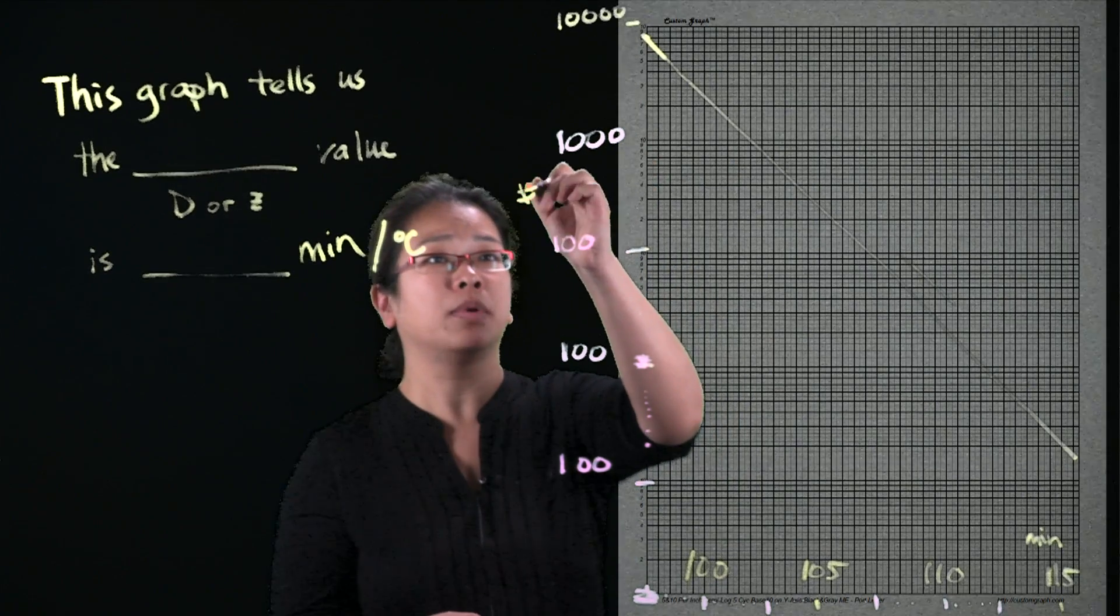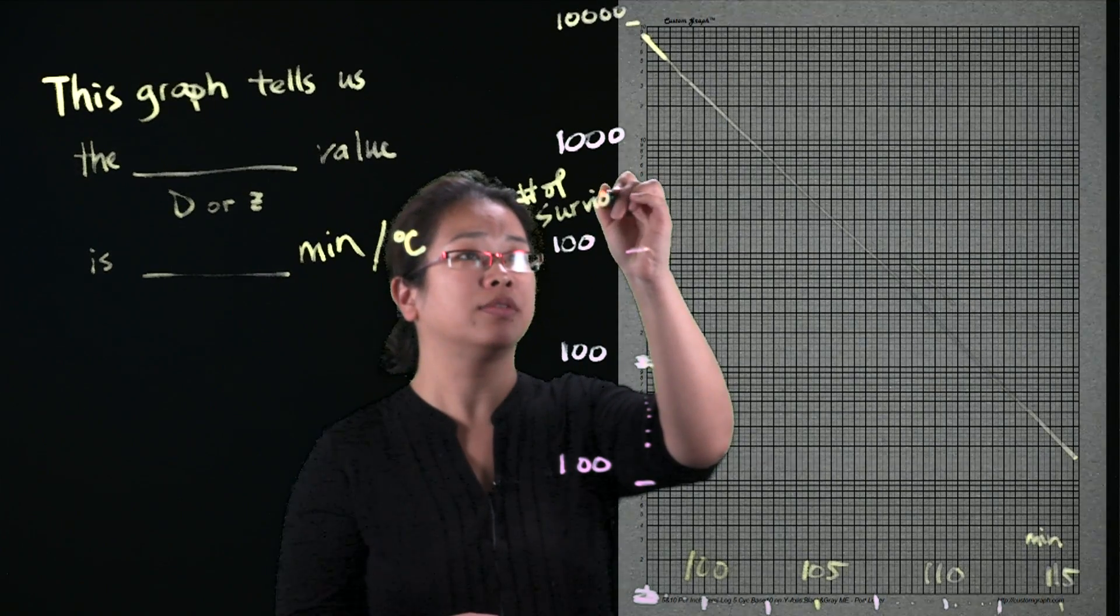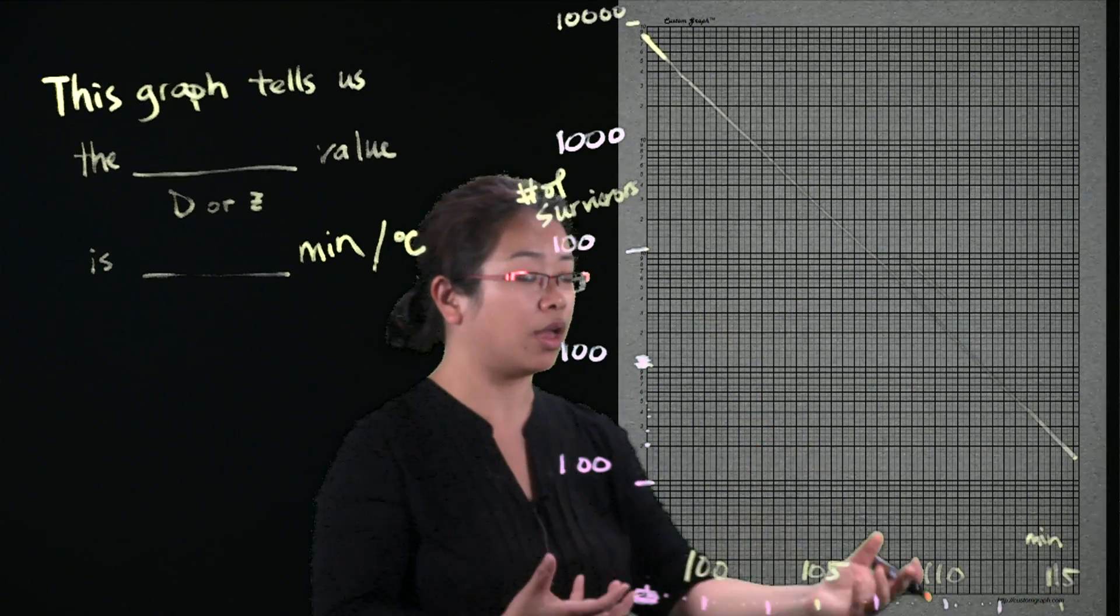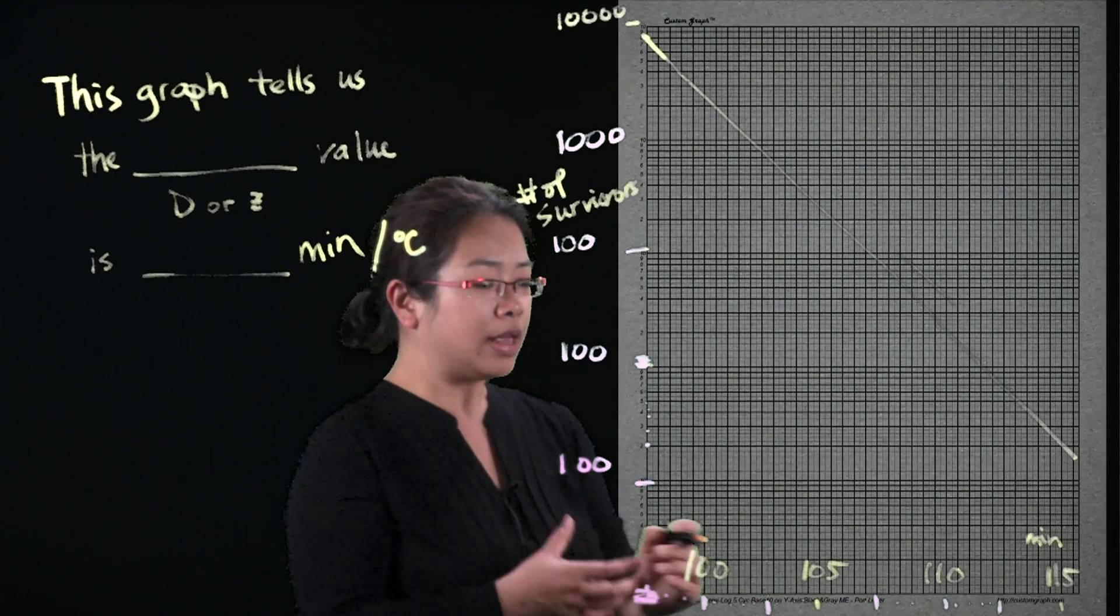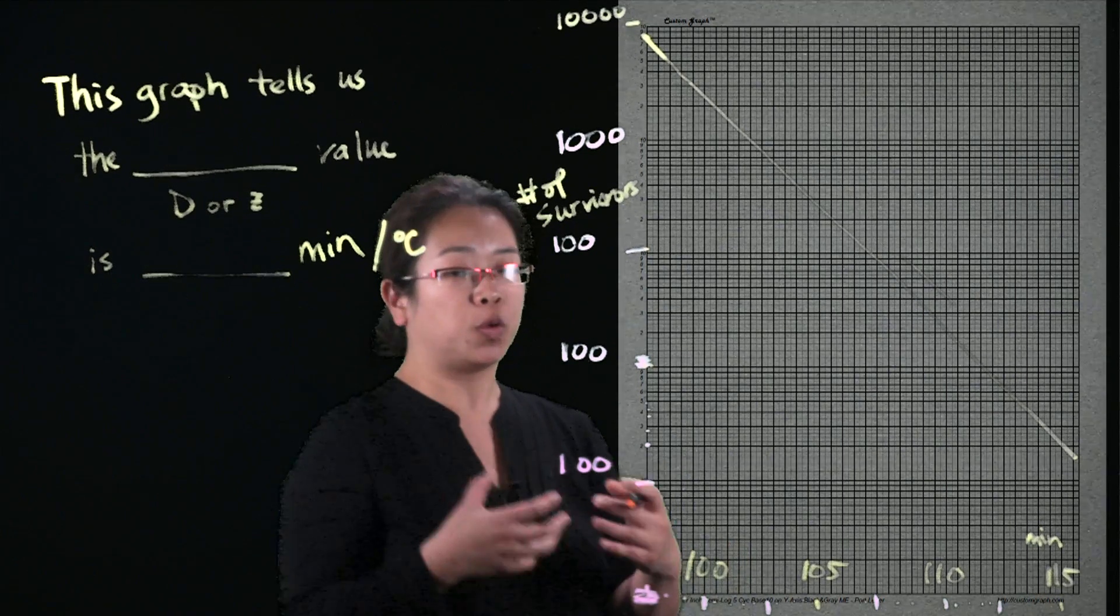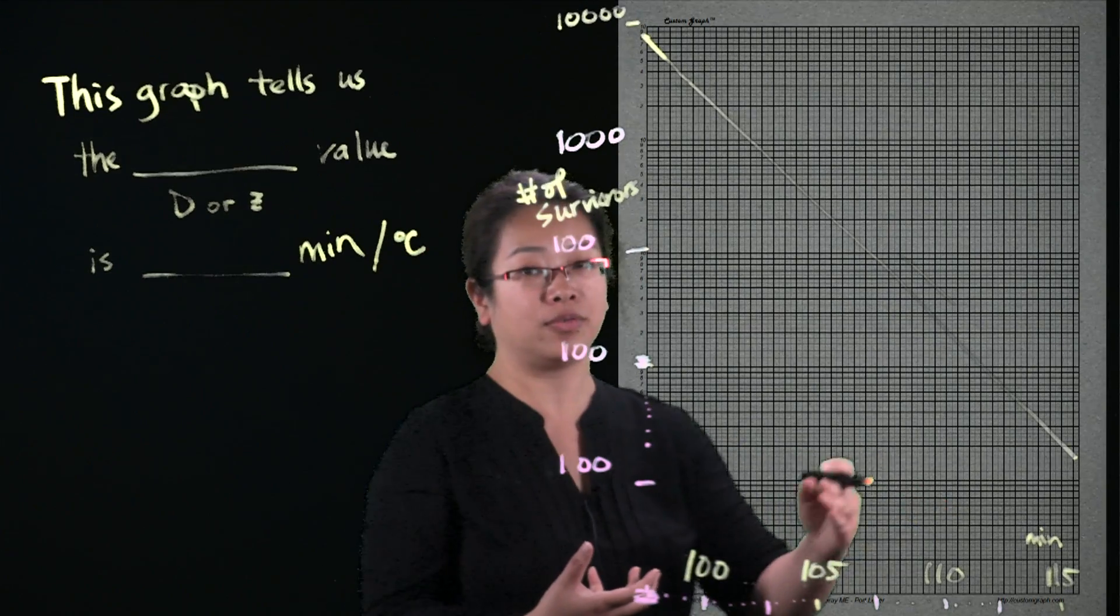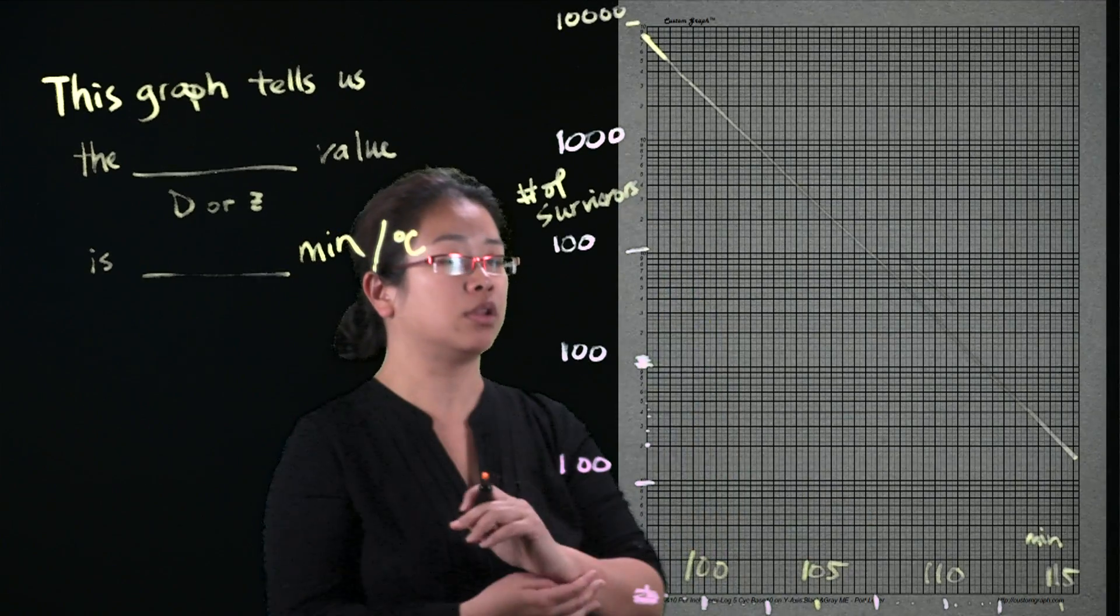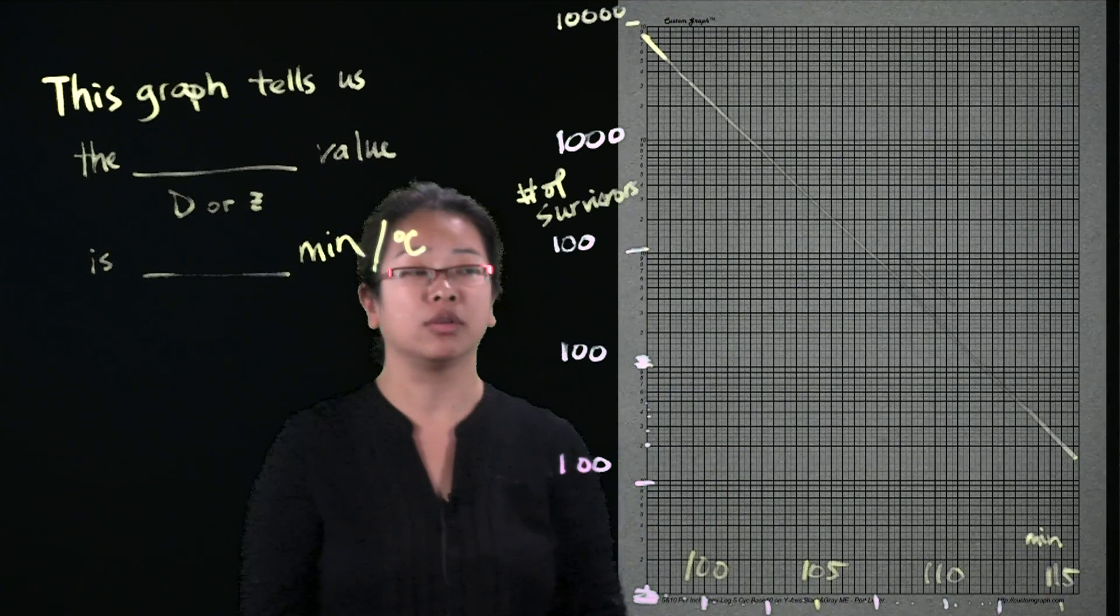This graph tells us the number of survivors, the number of microorganisms that is still there at the end of the processing time. So we will spike our food and process it at a designated temperature, and then we will take samples at different times along the process. And then we can plot this on the logarithmic graph to get a straight line, pretty much a linear line.